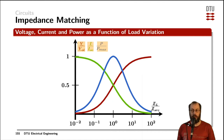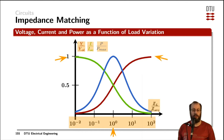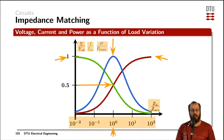Plotting the ratio of load to source impedance on a logarithmic x-axis, we see that the maximum current occurs at the lowest load impedance (short circuit), the maximum voltage occurs at the highest load impedance (open circuit), and maximum power transfer occurs when the load impedance equals the source impedance. At the point of maximum power transfer, voltage and current curves cross, meaning we have half the maximum voltage across the load and half the maximum possible current through the load.